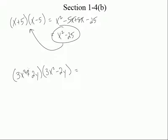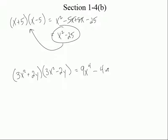Let's multiply 3x squared plus 2y times 3x squared minus 2y together. So it's 3x squared times 3x squared, which is 9x to the 4th. The outside is minus 6x squared y, and the inside is plus 6x squared y — those add up to zero, so they go away. The last term: positive times negative is minus, and 2 times 2 is 4, so it's minus 4y squared. So the result is 9x to the 4th minus 4y squared.